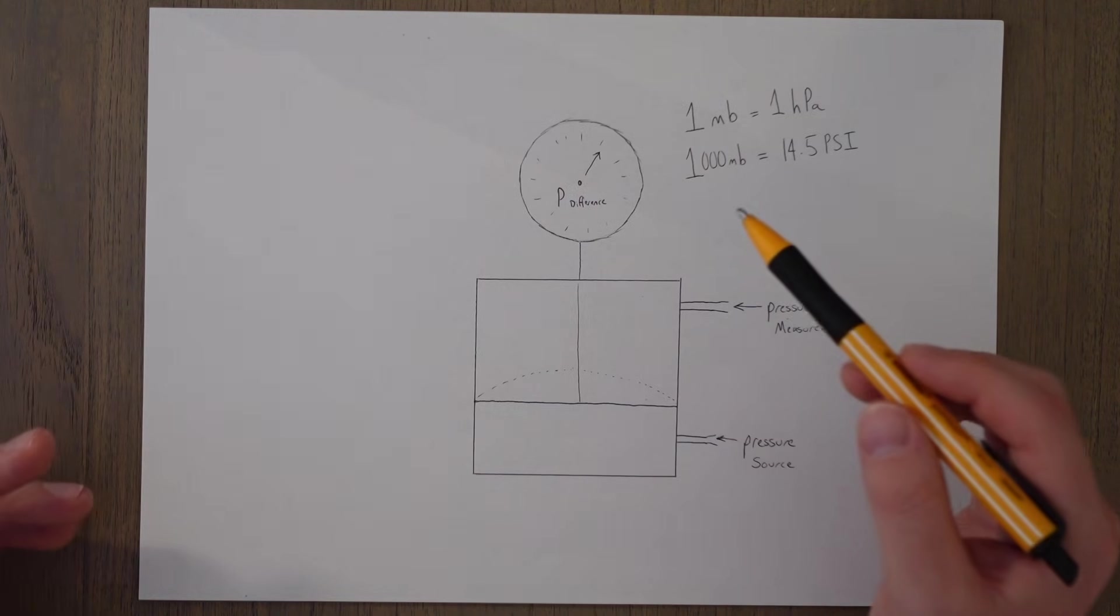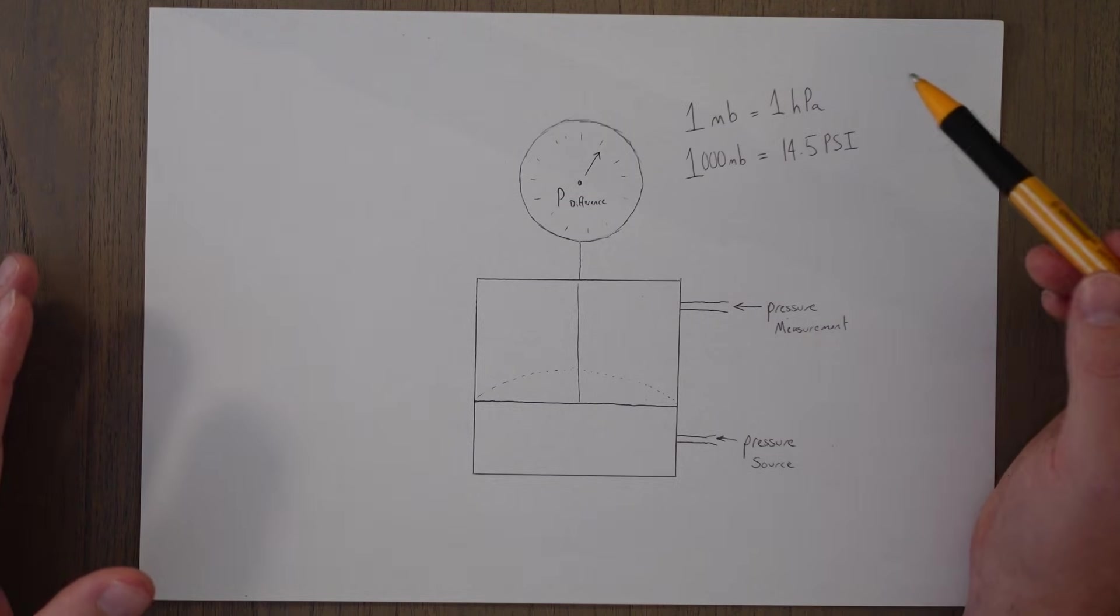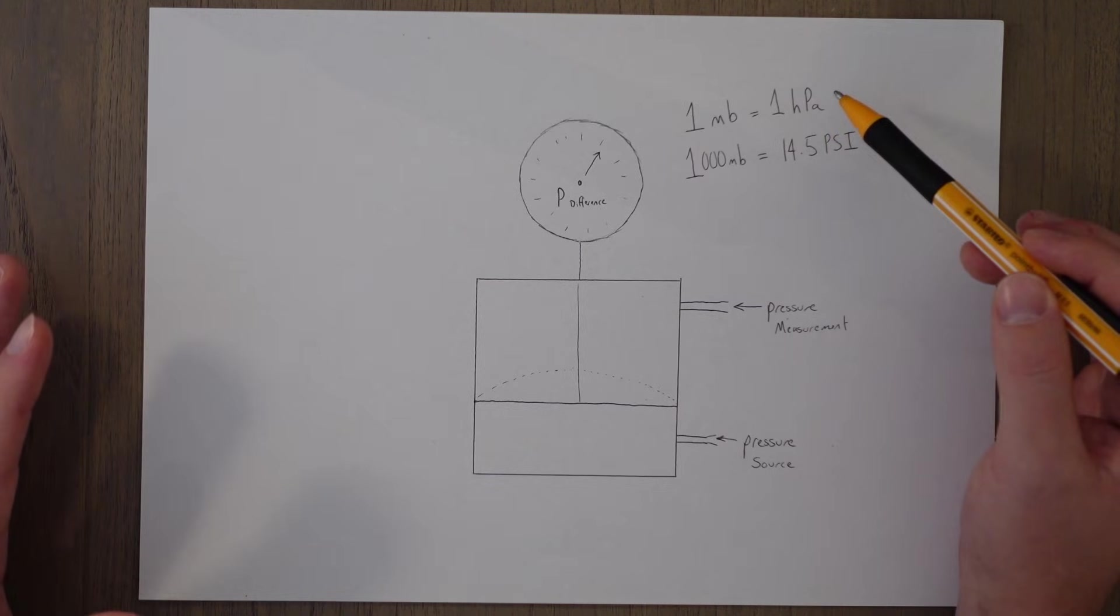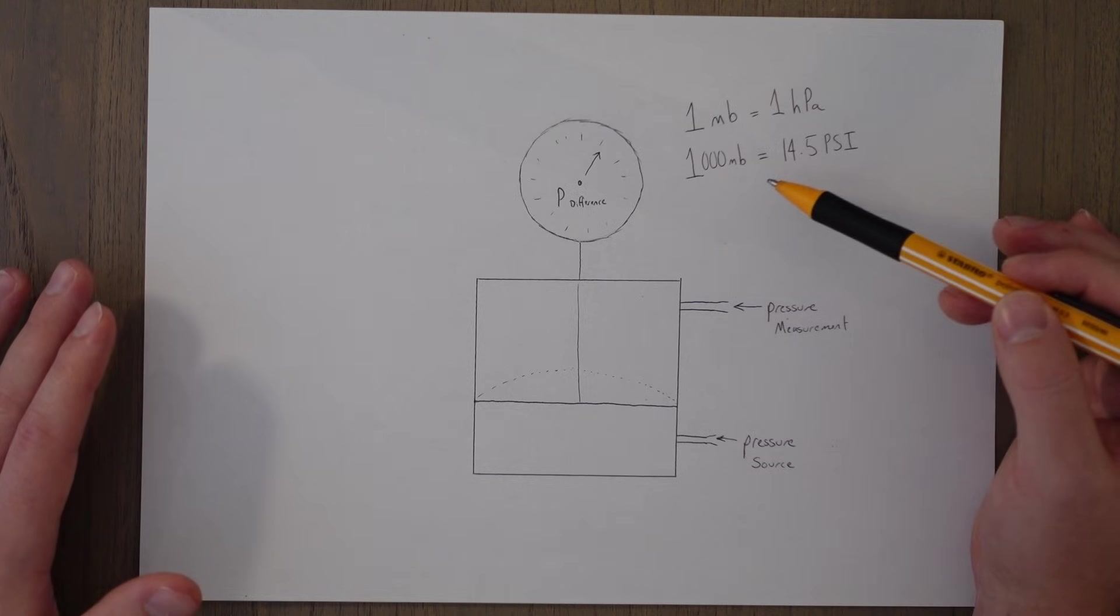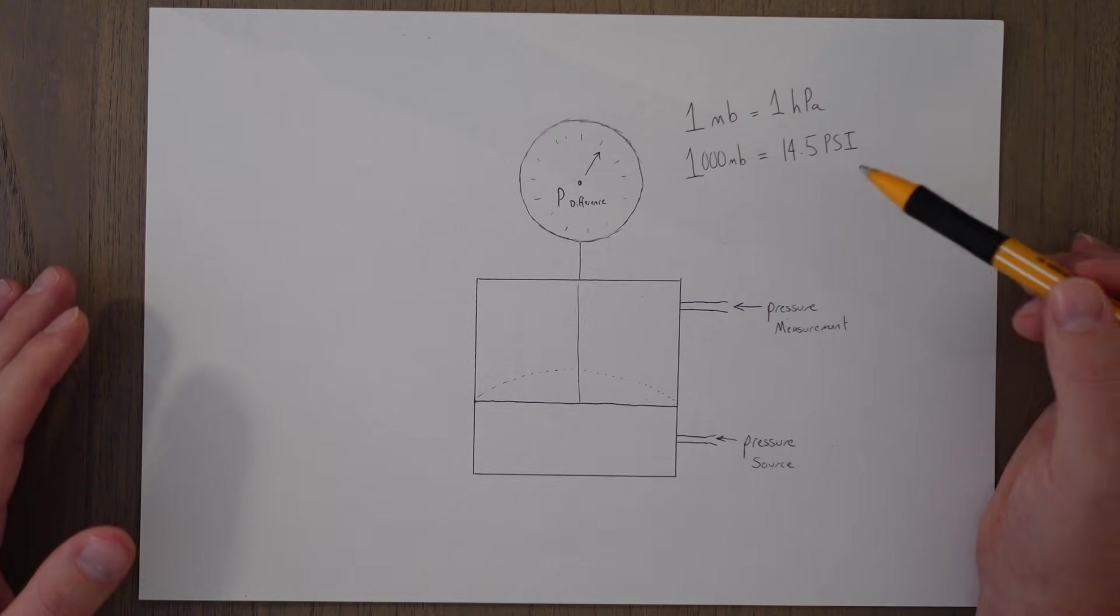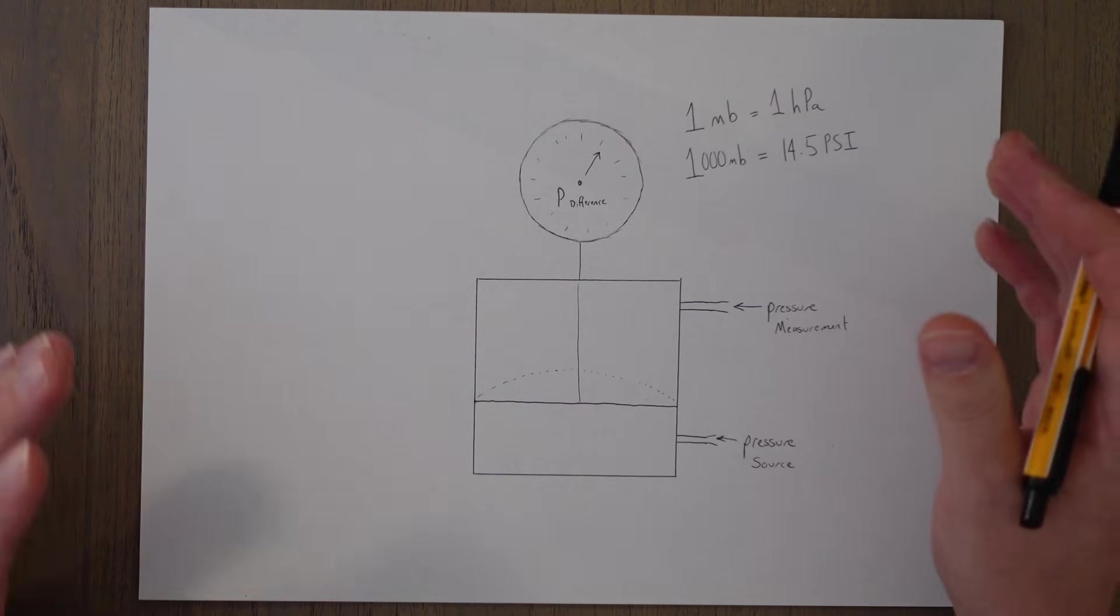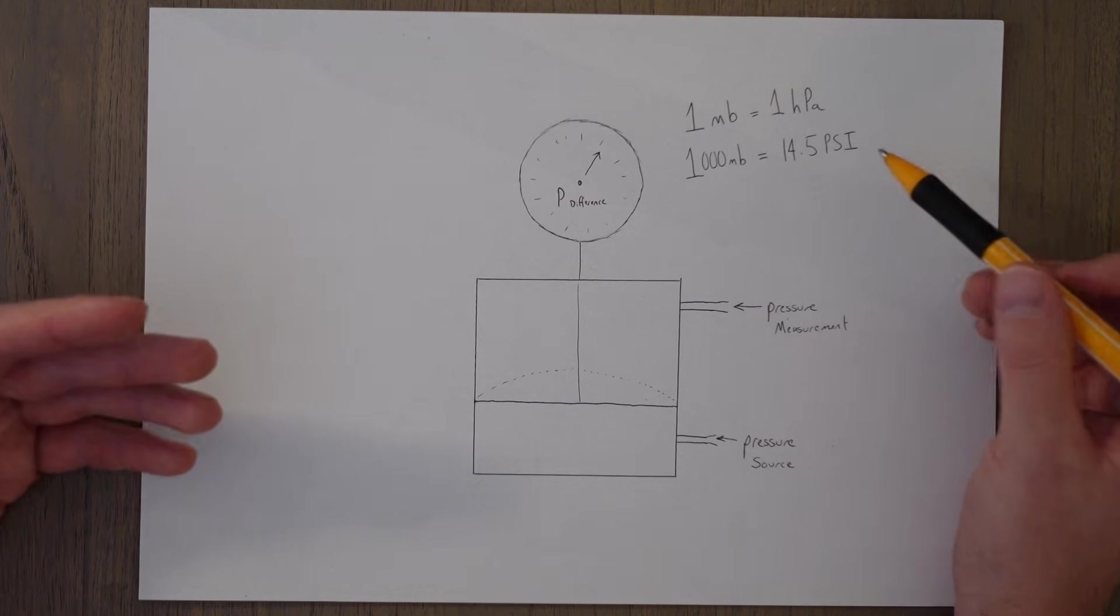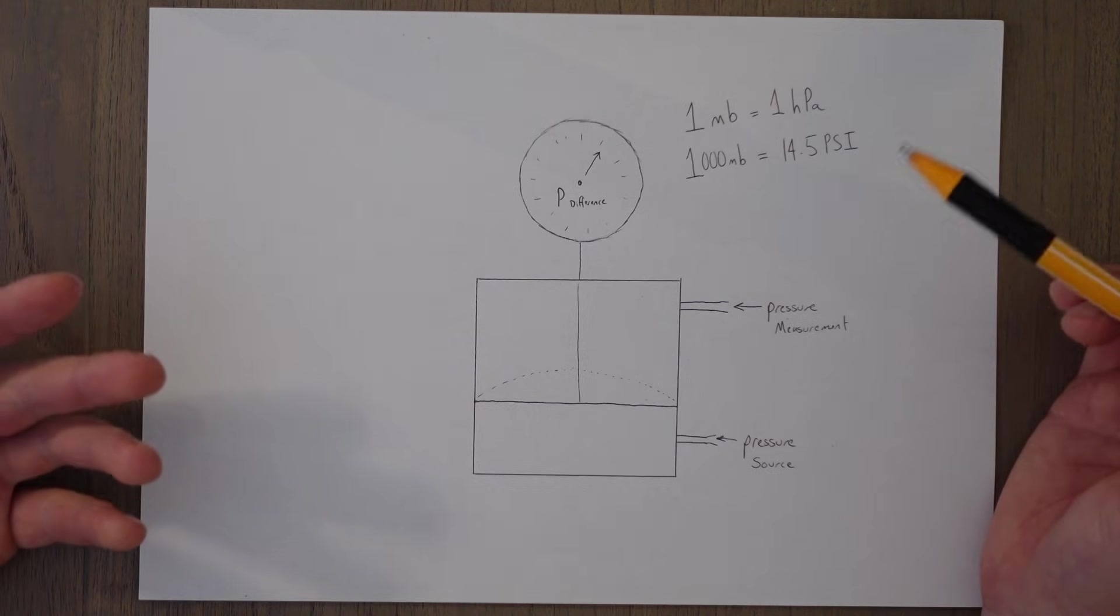And what we are reading can be a few different units. It can be quite confusing. What you'll often see is millibars and hectopascals. They're exactly the same. And then you'll see one bar, which is a thousand millibars, is equal to 14.5 PSI pounds per square inch. There's not really any rhyme or reason as to why we measure some things in PSI and other things in millibars or hectopascals. It can be quite confusing.